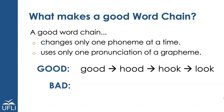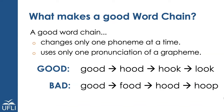For example, going from good to hood, hood to hook, hook to look — I'm preserving the same vowel sound in each word. In contrast, if I went from good to food, food to hood, hood to hoop, I'm only changing one letter, but I'm using a different sound for the oo grapheme.